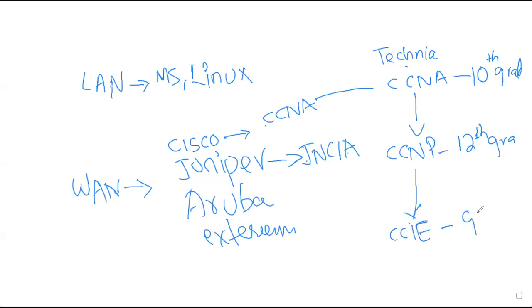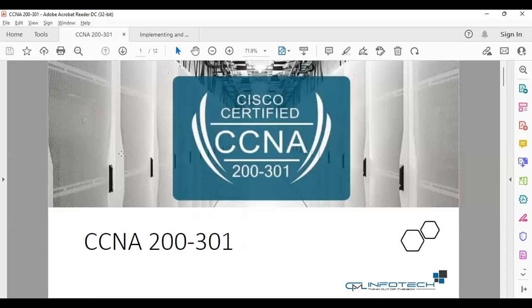In order to configure a particular Cisco product, we need product-based knowledge — from Cisco we call it CCNA. So this is the first course: Cisco Certified Network Associate, CCNA, paper number 200-301.